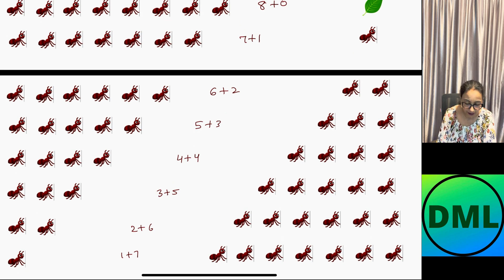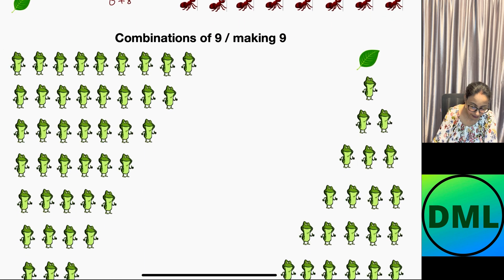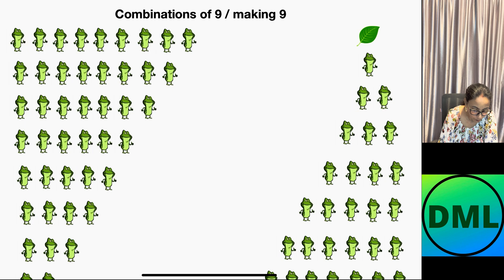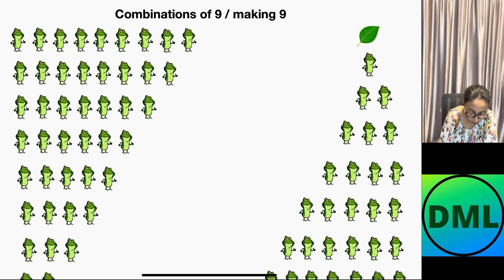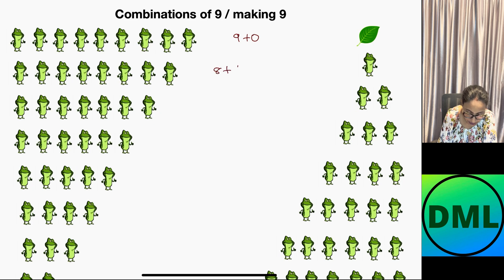There are 9 combinations of 8. Now let's see the combinations of 9. Here we have 1, 2, 3, 4, 5, 6, 7, 8, 9 frogs. Let's write down the first combination as 9 plus 0 because on the right side there is no frog. Next combination will be 8 plus 1, then 7 plus 2, then 6 plus 3, then 5 plus 4, then 4 plus 5.